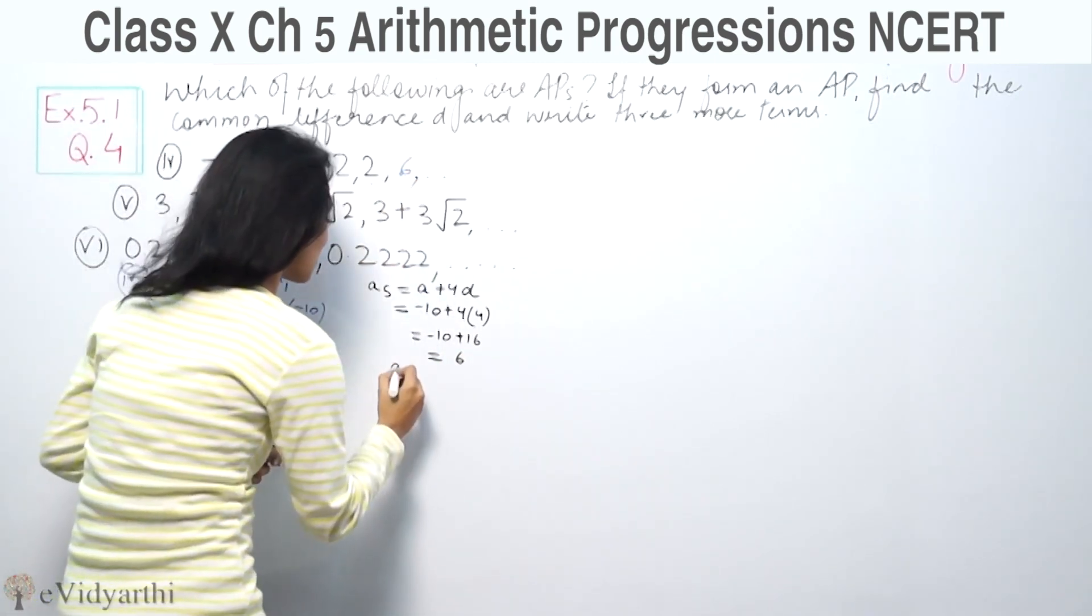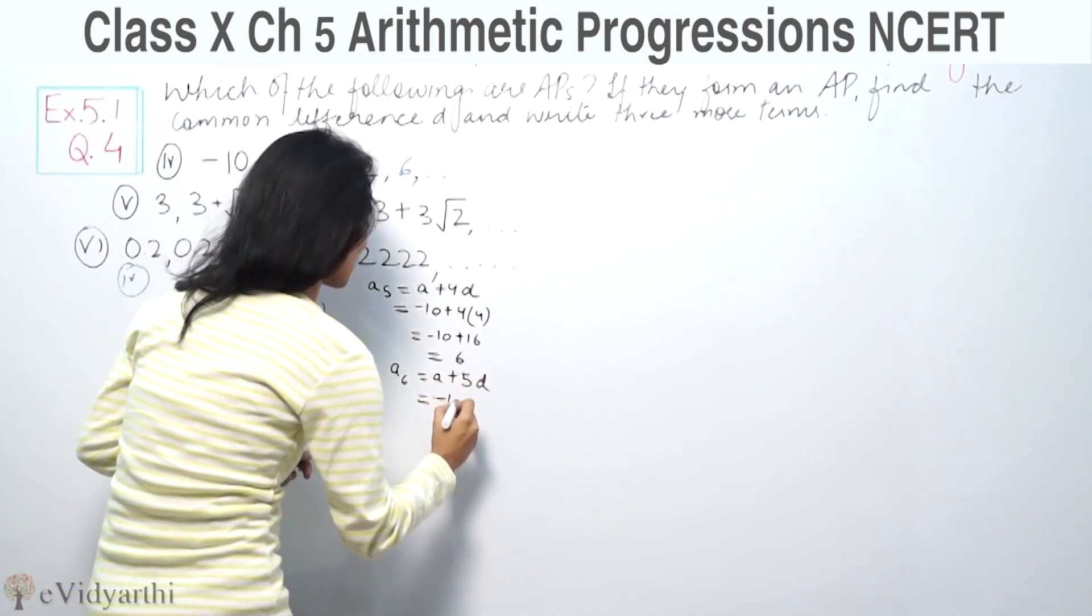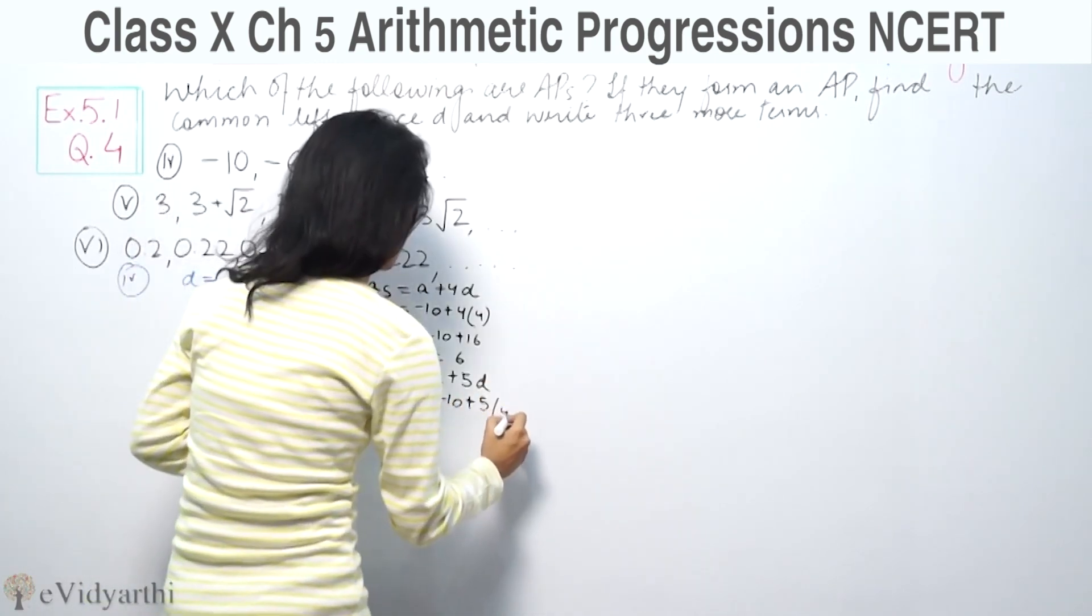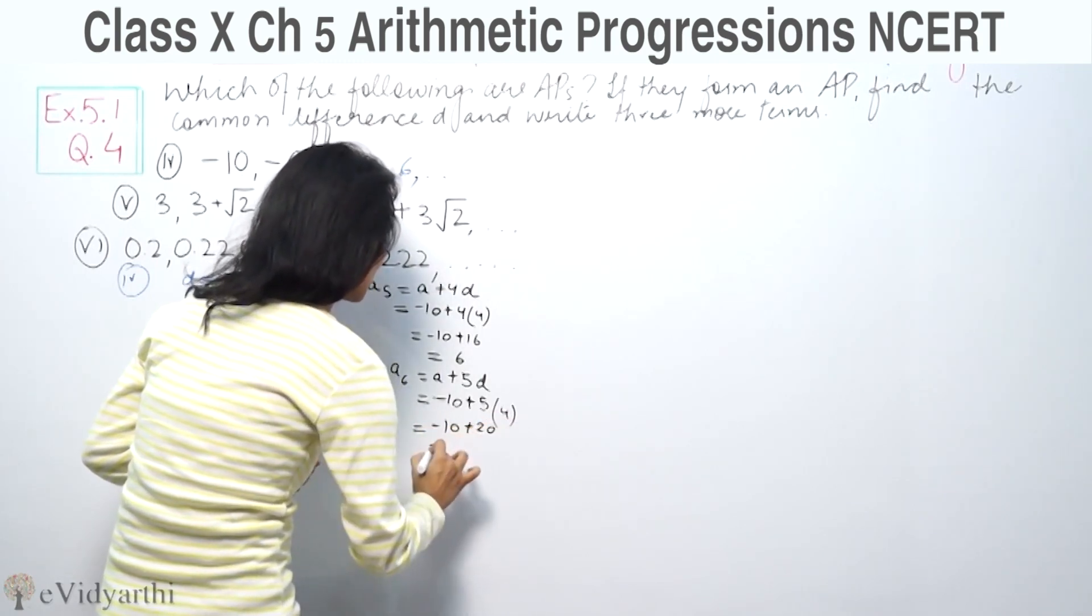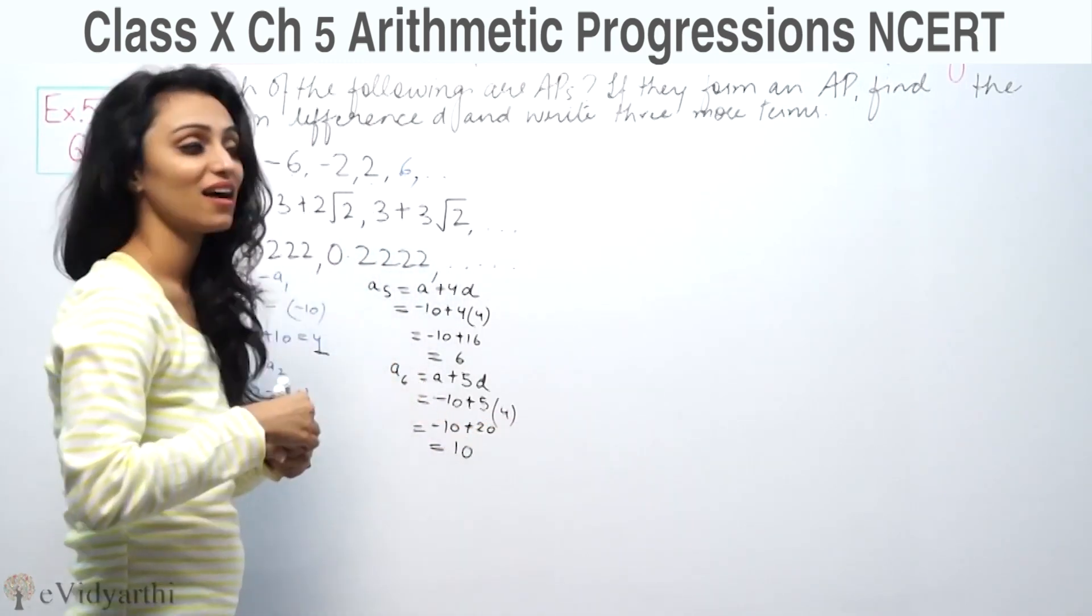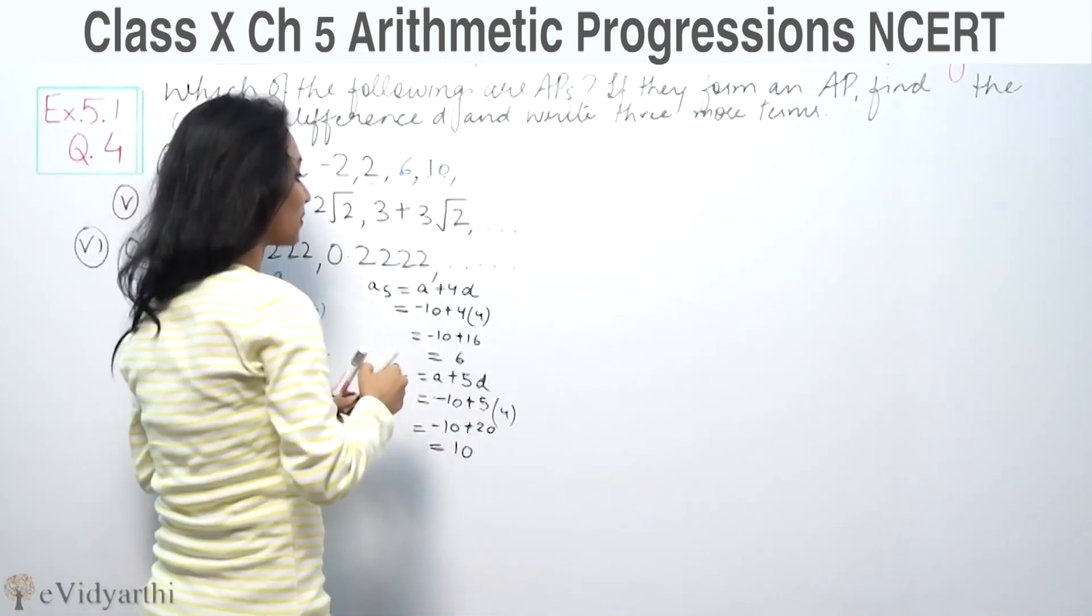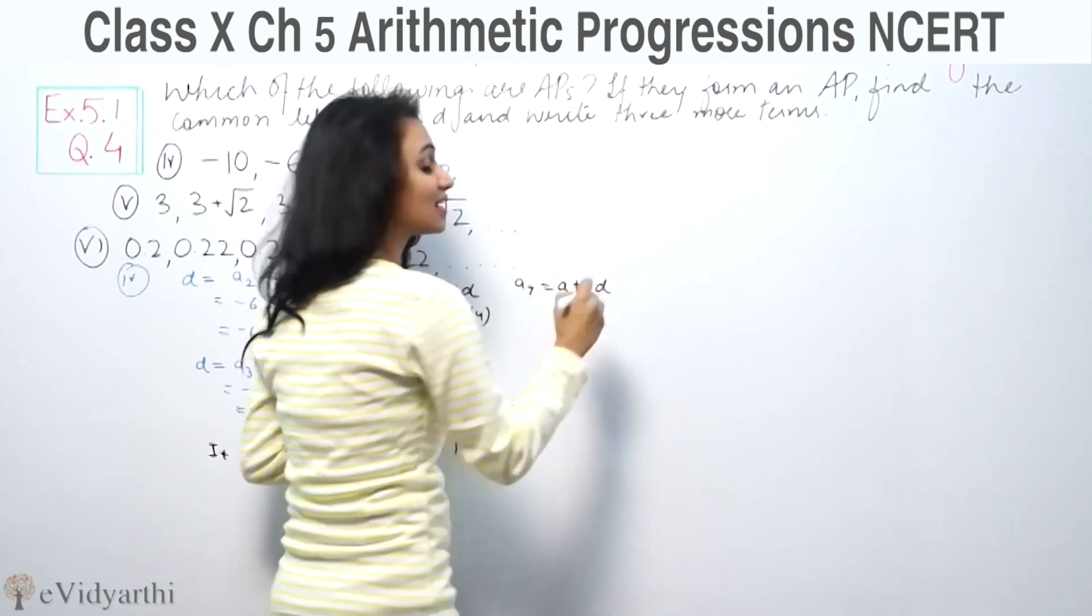For the fifth term, A5 equals A plus 4d. The first term is -10, plus 4 times 4, which gives -10 plus 16 equals 6. For the sixth term, A6 equals A plus 5d, so -10 plus 20 equals 10.